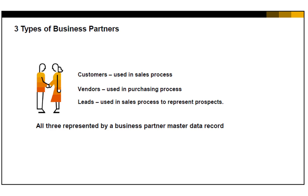Each lead, customer, or vendor is represented in SAP Business One by a business partner master data record. One transaction is used to access all three types of business partners; however, the forms for each type differ slightly so that they can hold the appropriate data for each.